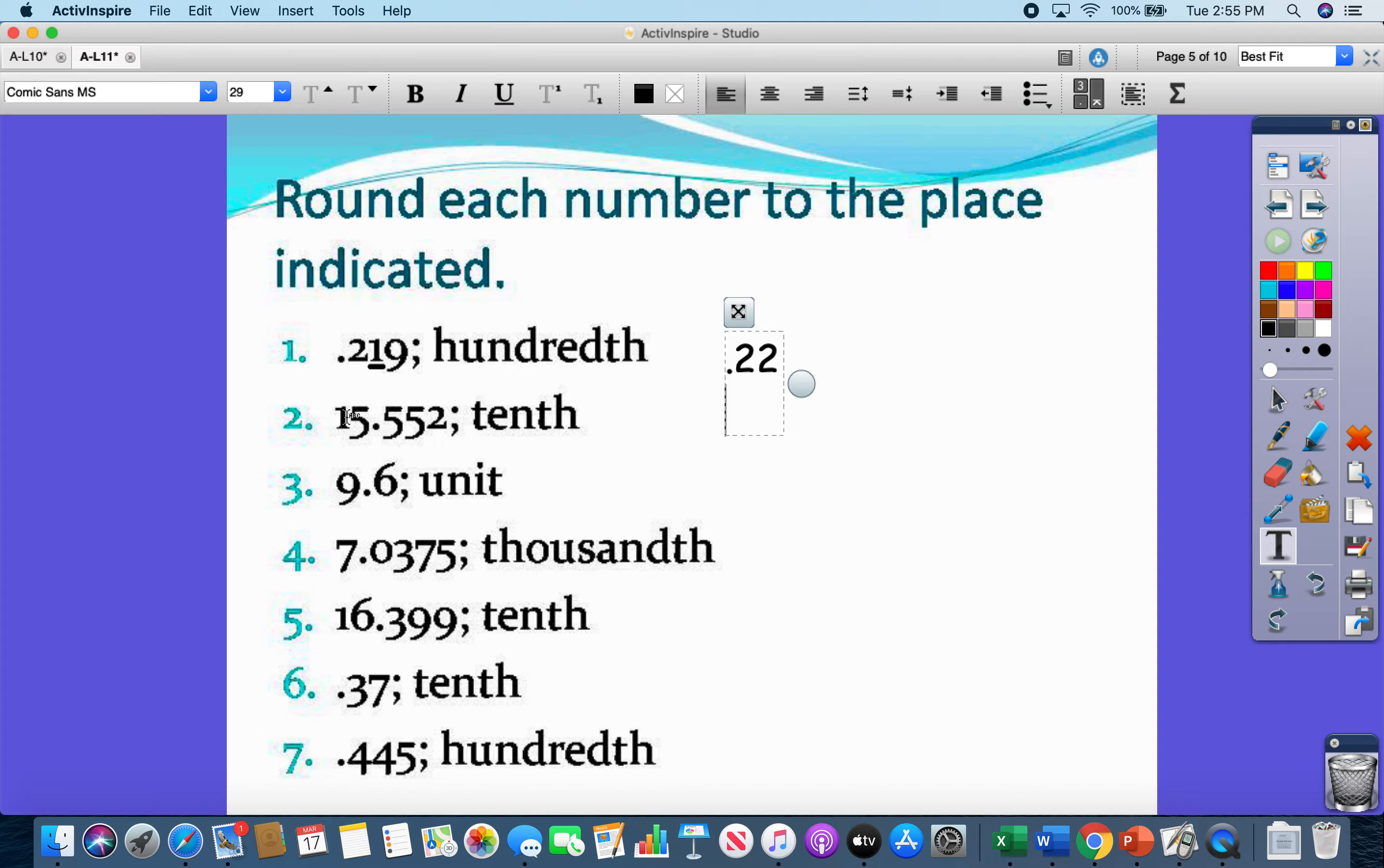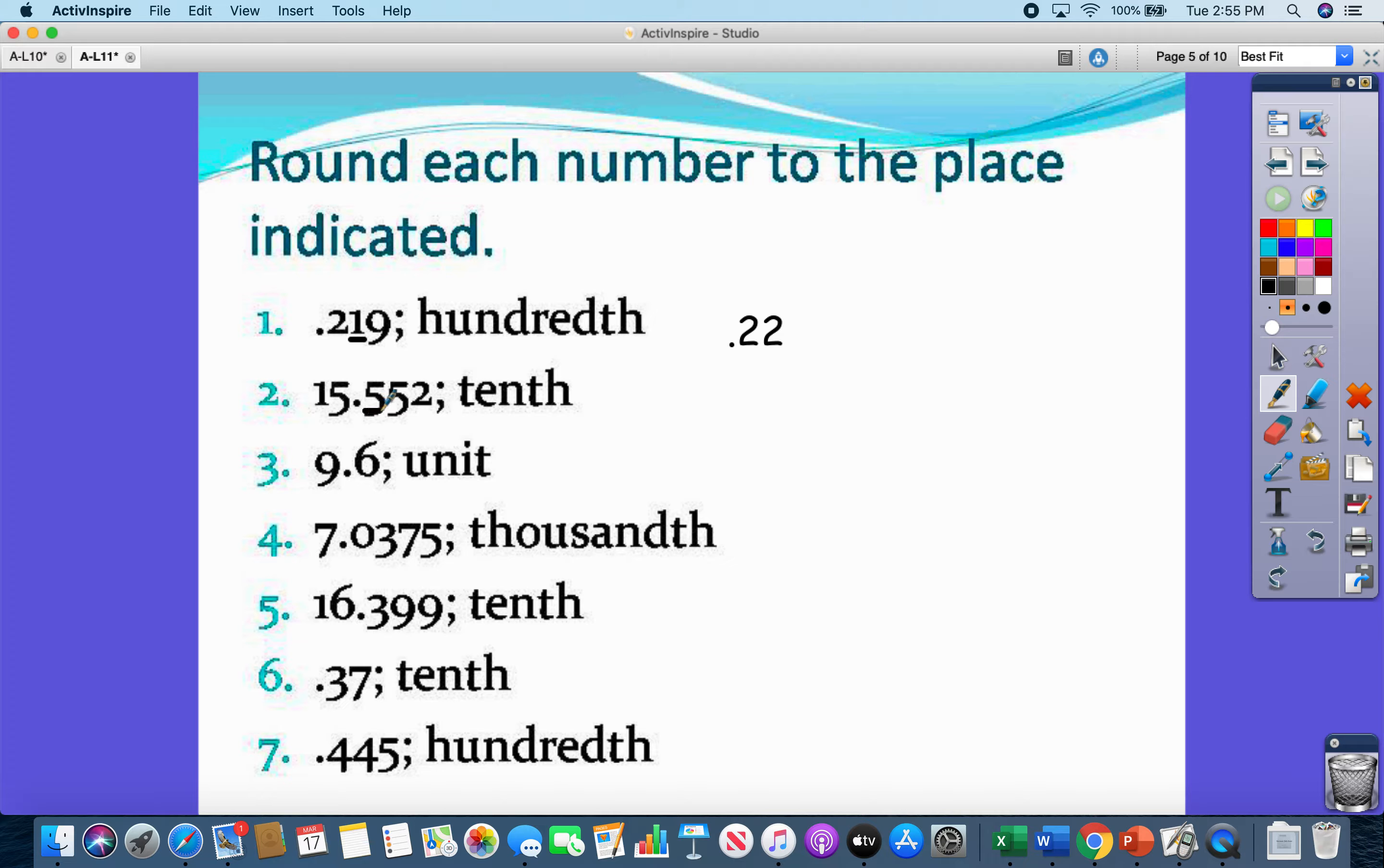All right, next up, number 2, 15 and 555 - 552 thousandths. Let's find the number in the tenths place. Look at the number to the right, which is the 5. 5 rounds up.